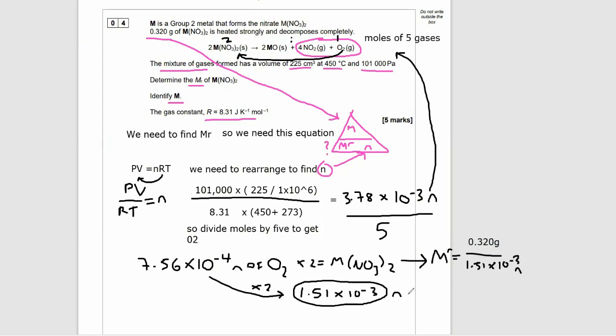You're going to do mass over the moles of the metal nitrate. Remember, you could get that metal nitrate by doing two-fifths of your 3.78 times 10 to the minus 3. Our MR is 211.9, which means we've pretty much secured 3 or 4 marks out of the 5 here. Now we know the MR, we can subtract the nitrate part of the metal nitrate formula.